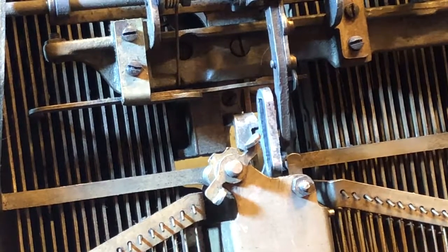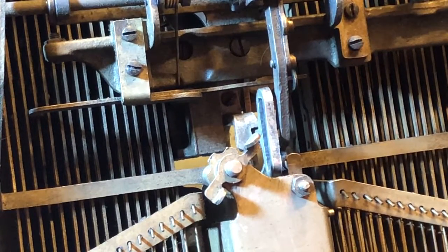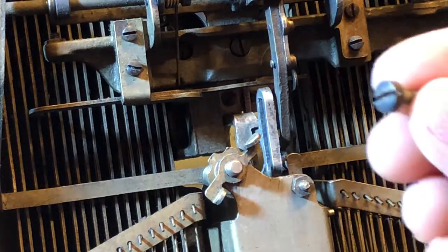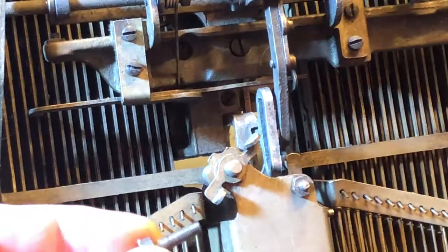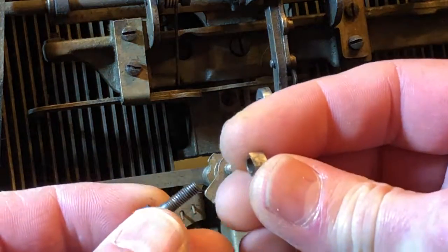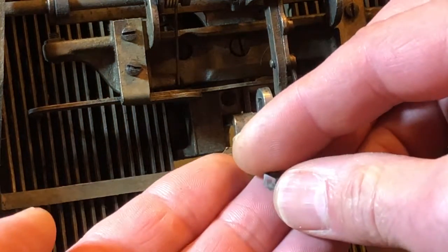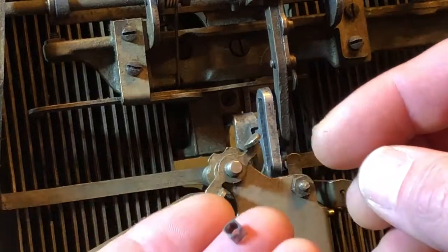Well let's get started. What we're going to do now is put this bolt in. This little square bolt, and you need to have that square to make that ribbon vibrator work right.